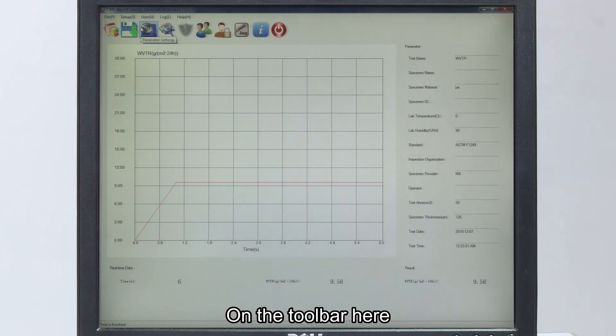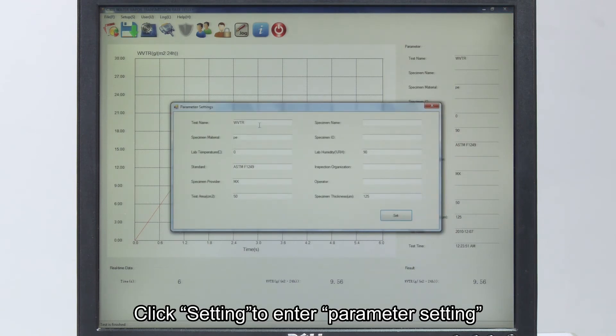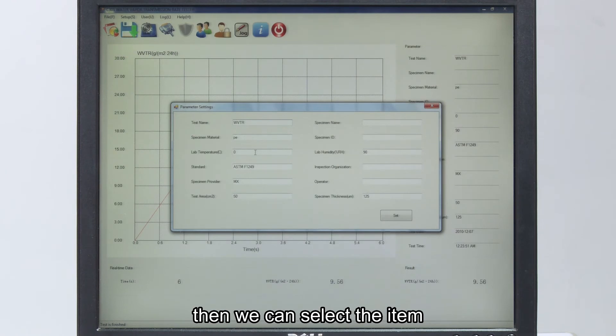On the toolbar here, click setting to enter parameter setting. Then we can select the item, preset, and save the parameters.